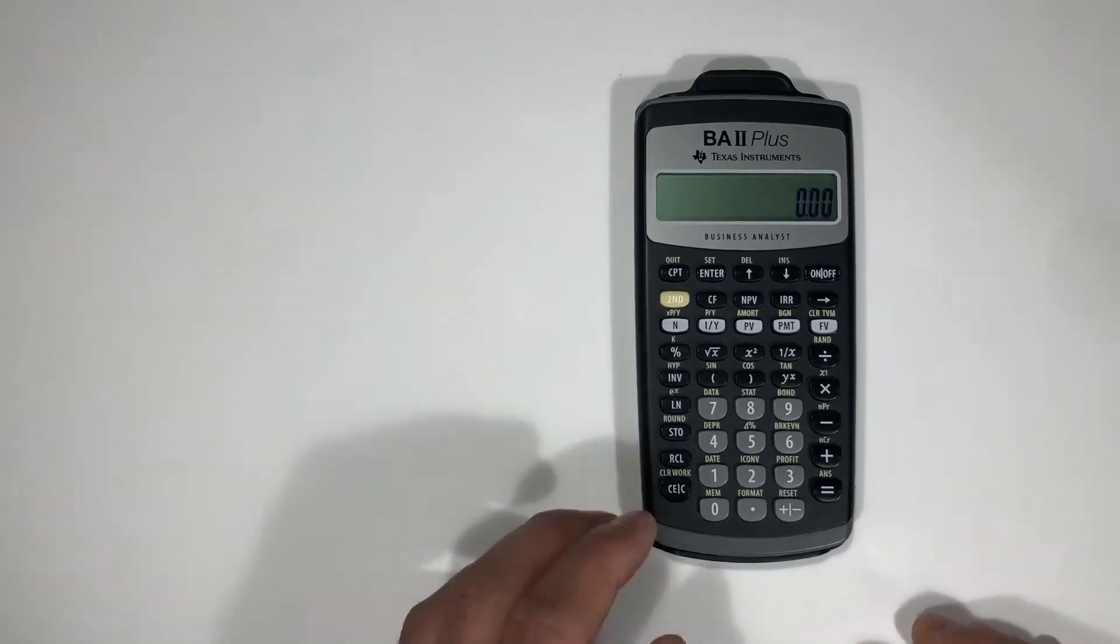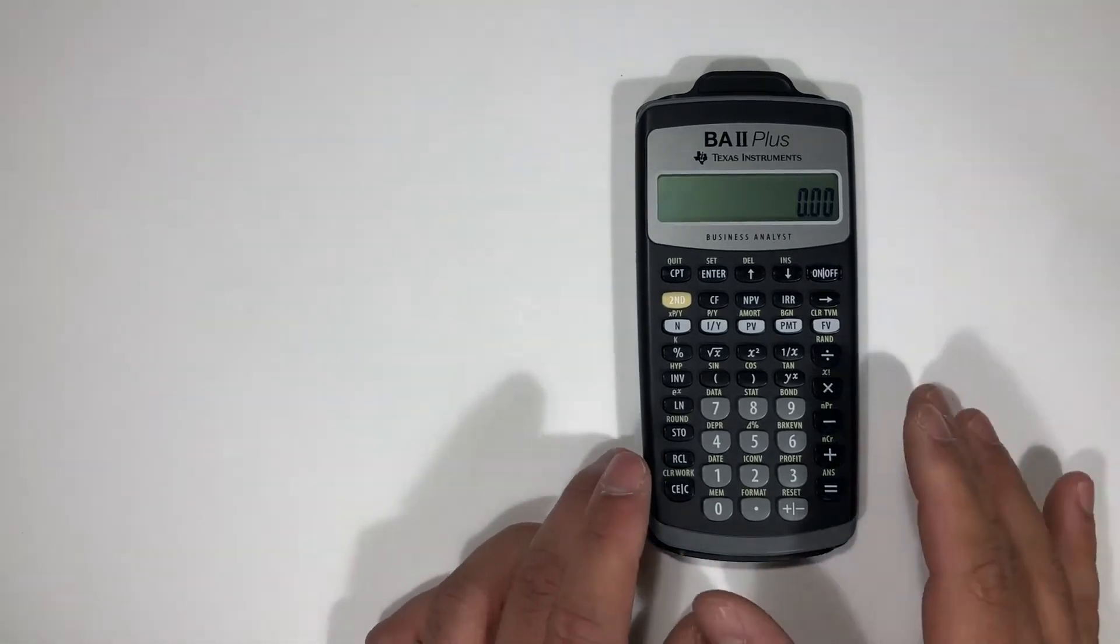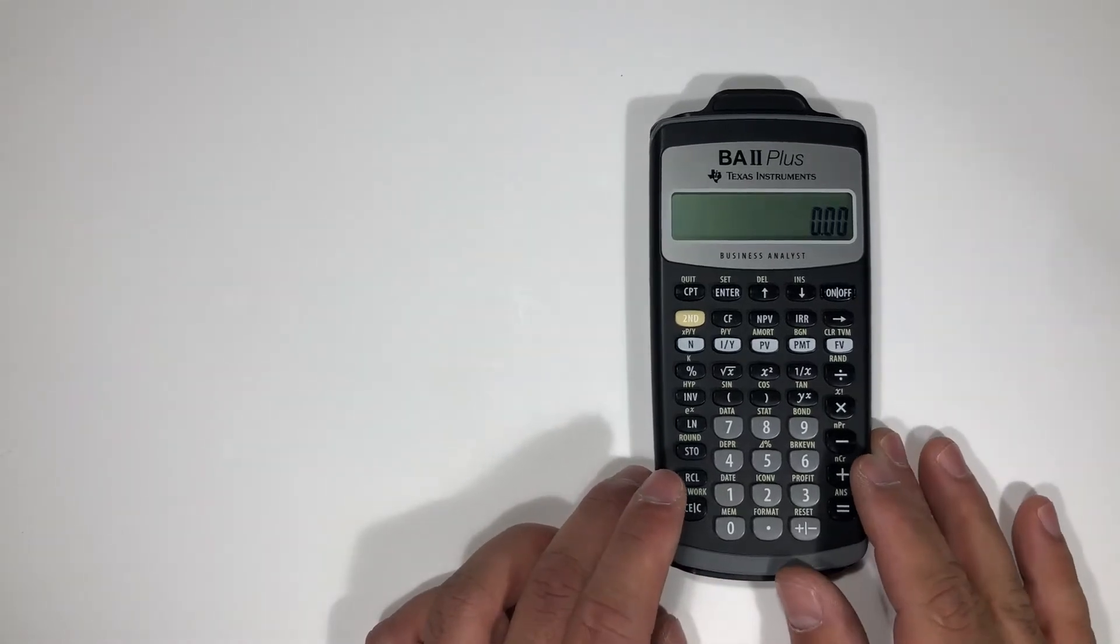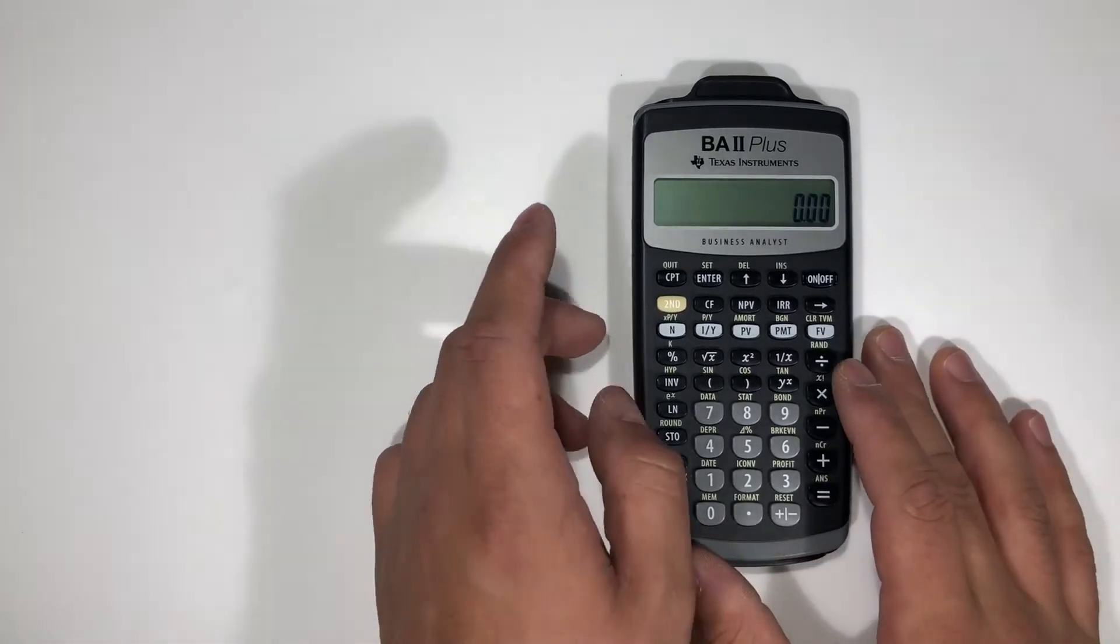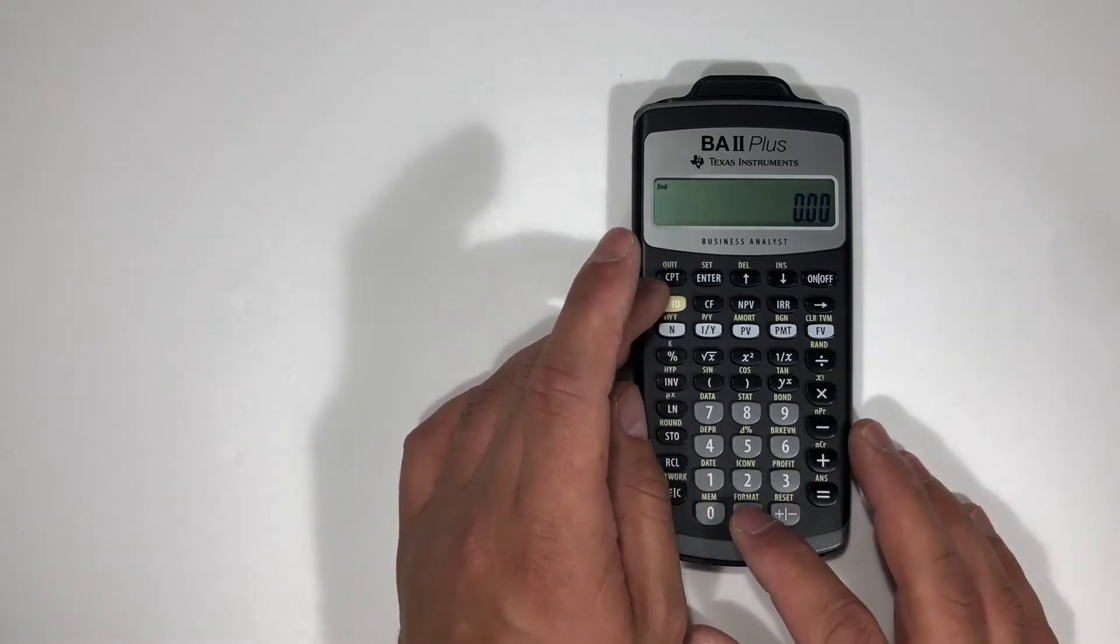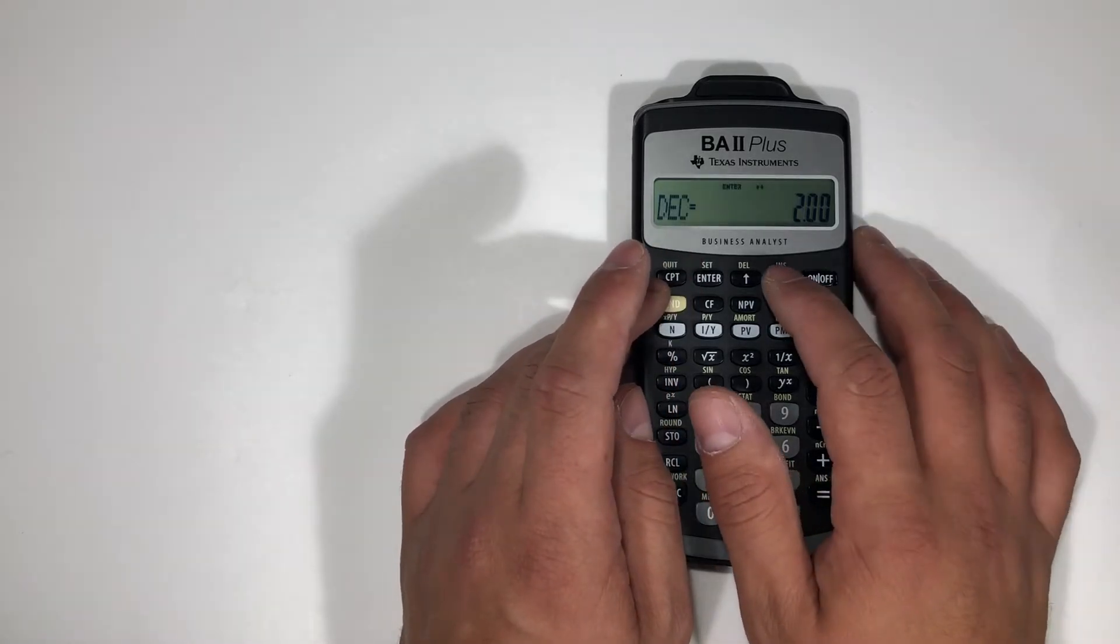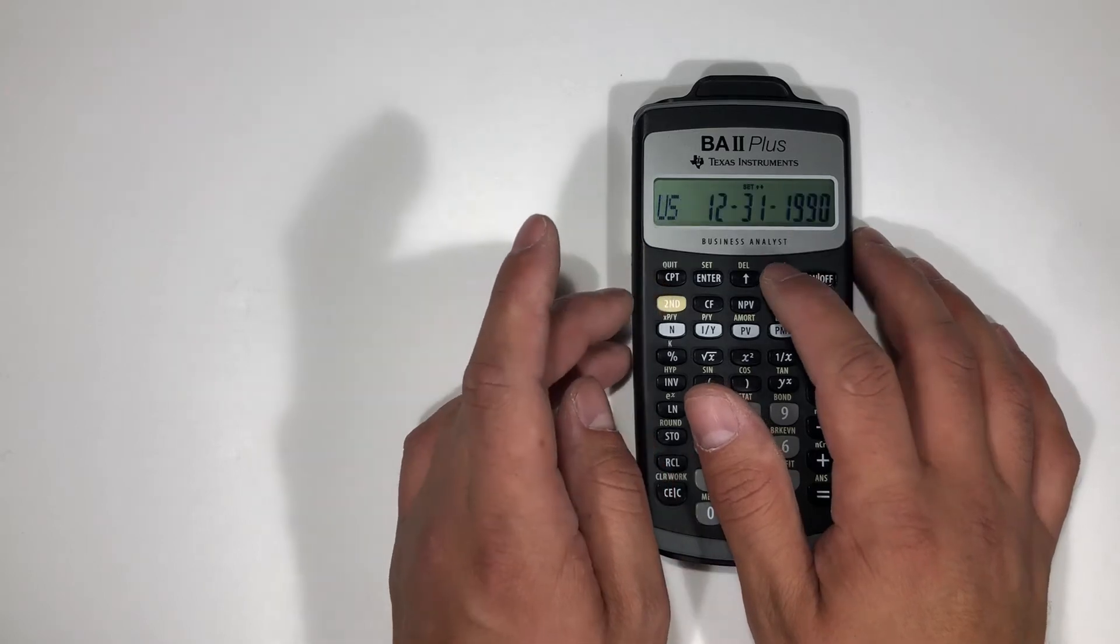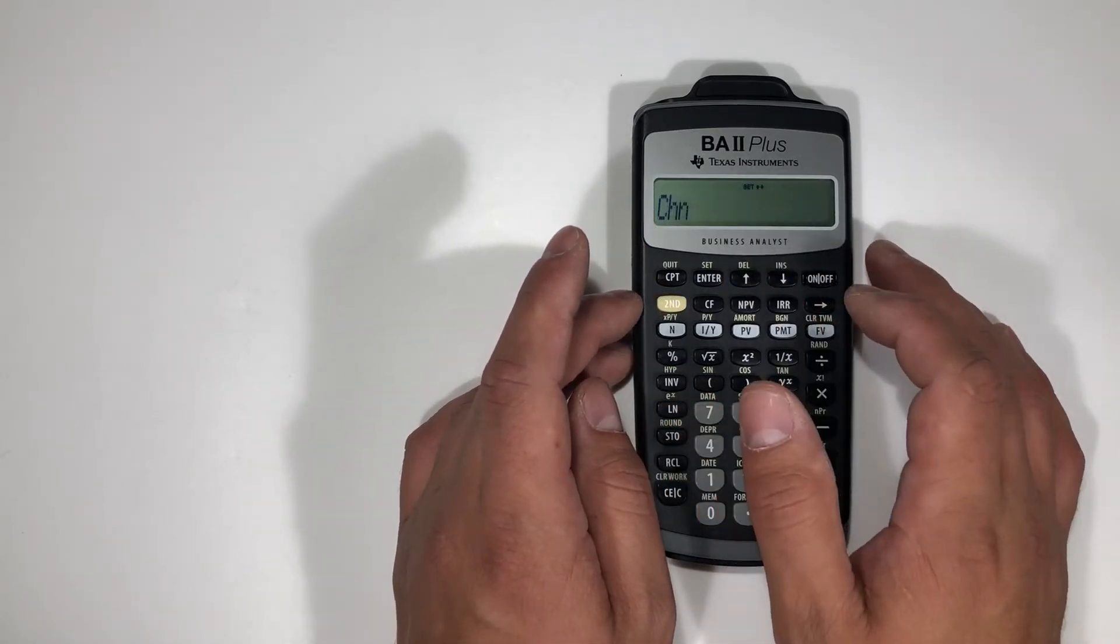Right now I want to show you the difference between the CHN and the AOS operations. To get to it you go to second format and then you're going to hit the down arrow, down, down, down, there it is.